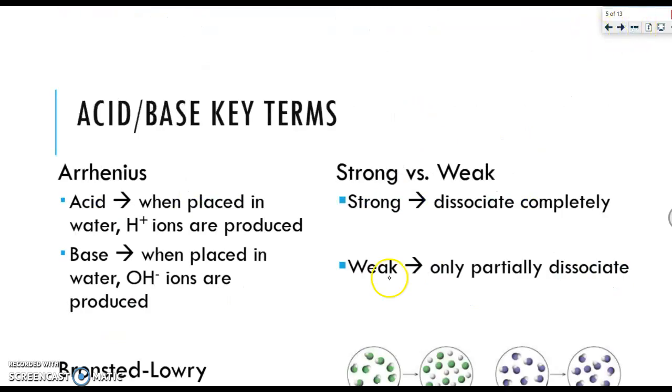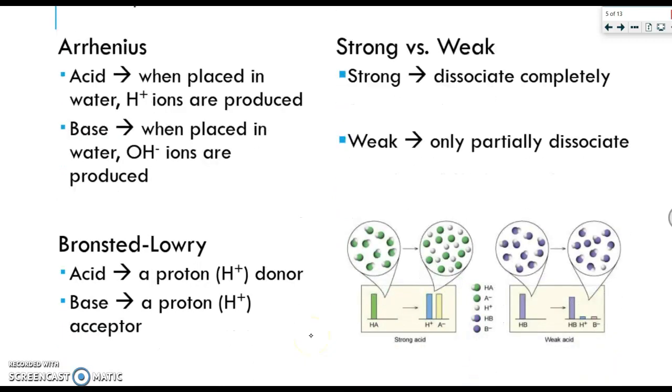Let's talk some key terms. We have some definitions that we need to discuss. One of the first definitions that existed for acids and bases was the Arrhenius definition. And this definition says that when placed in water, H plus ions are produced. And for a base, when placed in water, OH minus ions are produced. This definition isn't terrible. However, it does limit determining if something is an acid or a base to an aqueous solution. So basically, this is limited to aqueous solutions. And although most acids and bases are found in their aqueous state, it's not always the case.